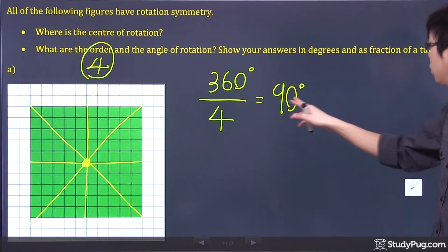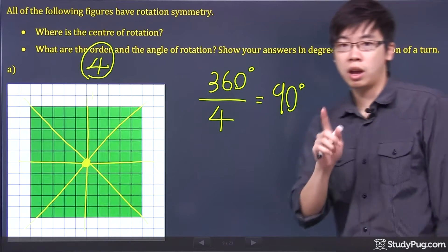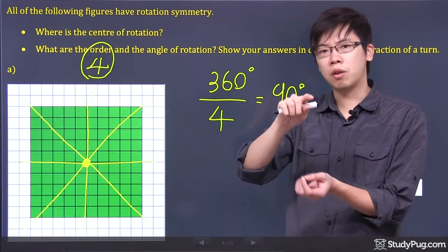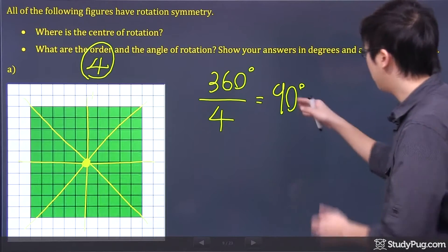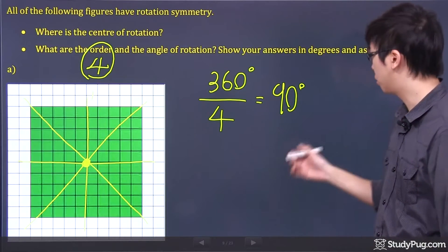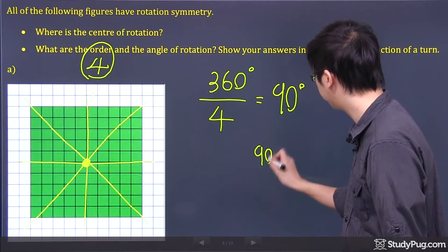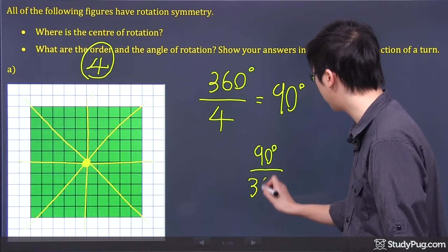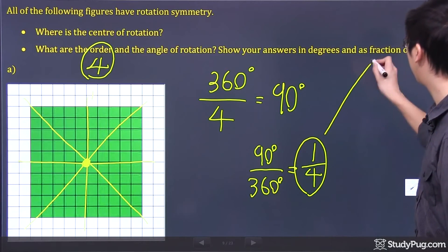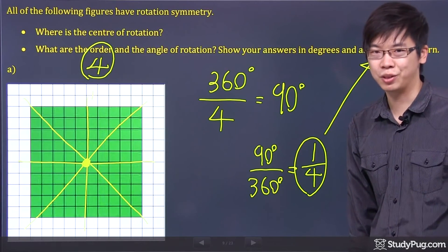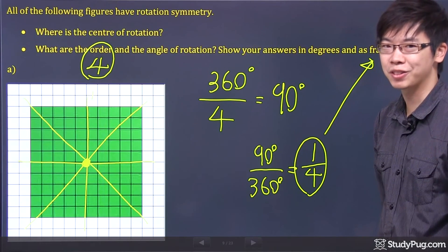It should show your answers in degrees, which is this one right here, and or as a fraction of a turn. Now, a fraction of a turn, it's 360, right? So if you take that and divide by 360, which is 90 divided by 360 again, basically, you get yourself one quarter. And this is your one quarter of a turn for this question. That's it. Thanks for watching.